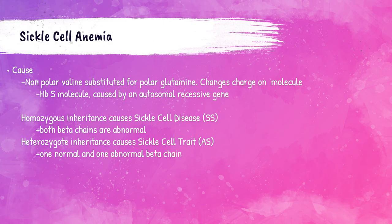The first hemoglobinopathy we're going to discuss is sickle cell anemia. This is caused by a non-polar valine amino acid substituted for a polar glutamic acid amino acid. This substitution changes the charge on the molecule and causes the formation of hemoglobin S, which is an abnormal hemoglobin type. So remember, for adults it's A or A1, A2, and hemoglobin F — hemoglobin S is not a normal type of hemoglobin.